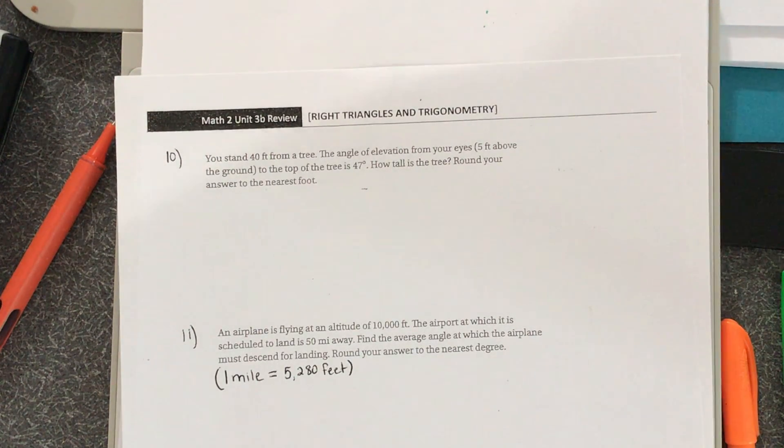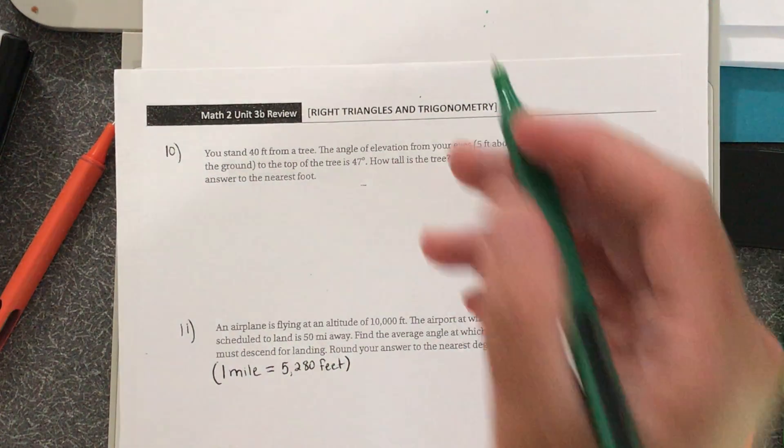You stand 40 feet from a tree. The angle of elevation from your eyes, 5 feet above the ground, to the top of the tree is 47 degrees. How tall is the tree? Round to the nearest foot.